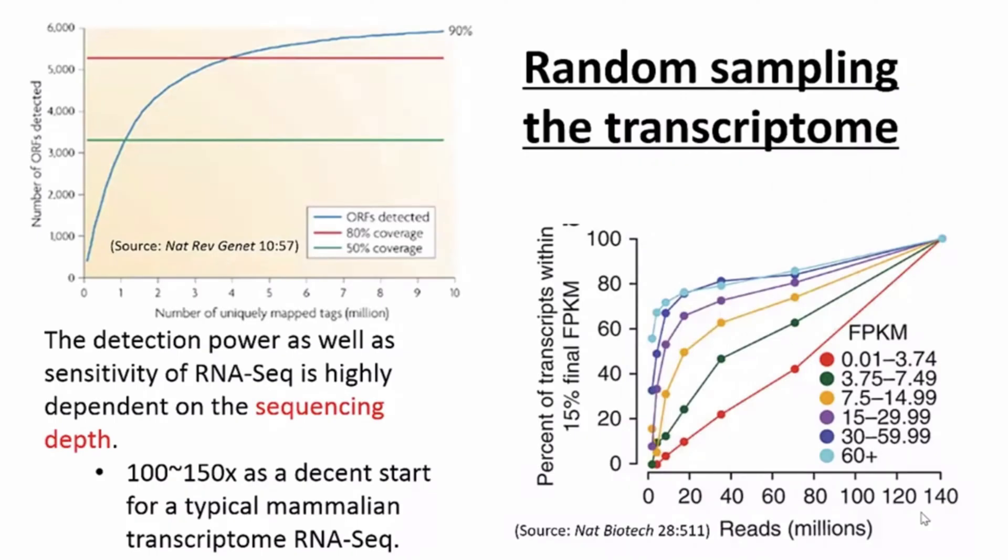Please note that RNA-seq is in nature a random sampling of transcript sequences. Thus, its power of detection and sensitivity strongly depends on the depth of sequencing. Lacking enough depth of sequencing will make it very hard to detect low-copy genes. In principle, the depth cannot be considered enough unless the saturation curve reaches the plateau.